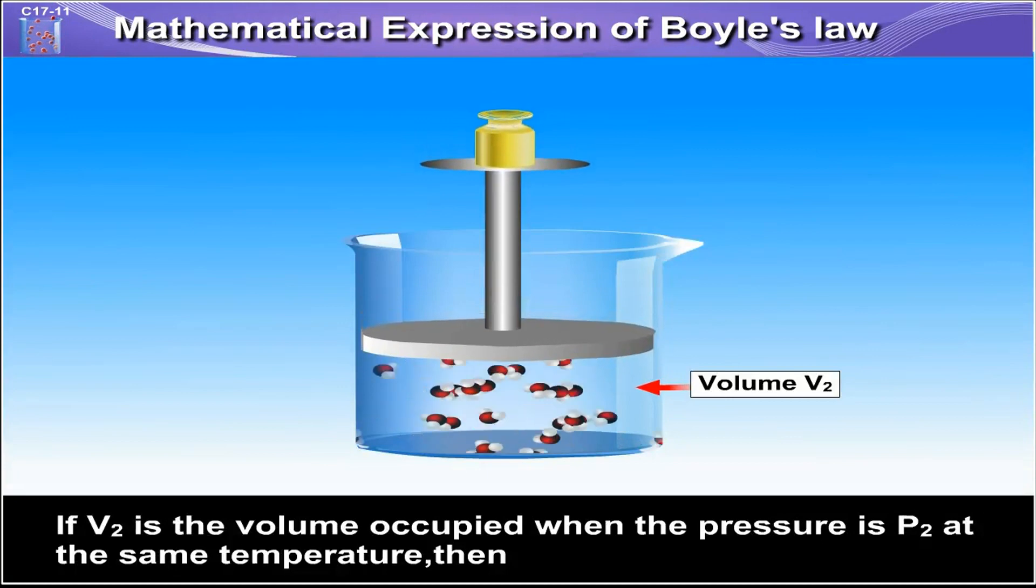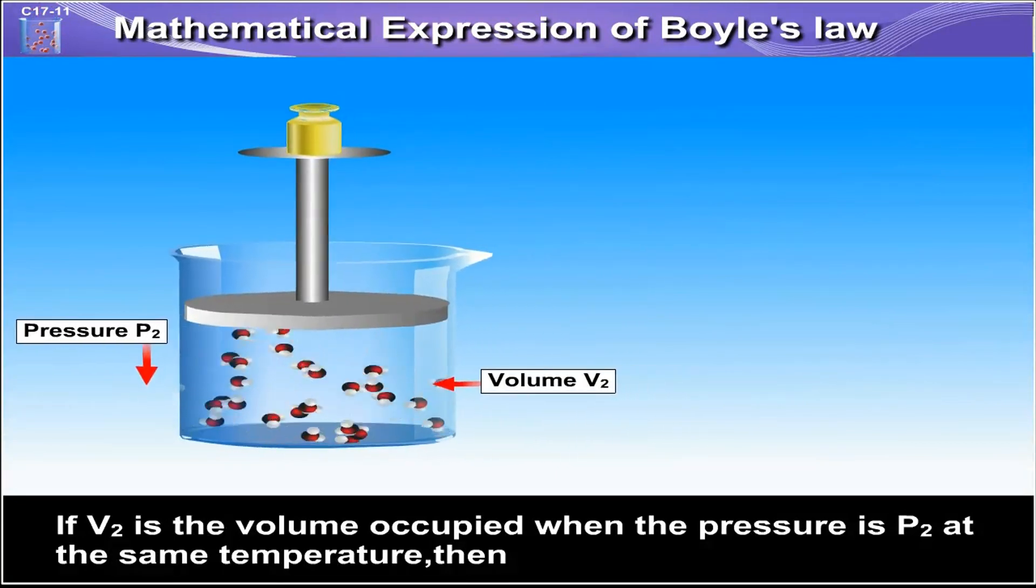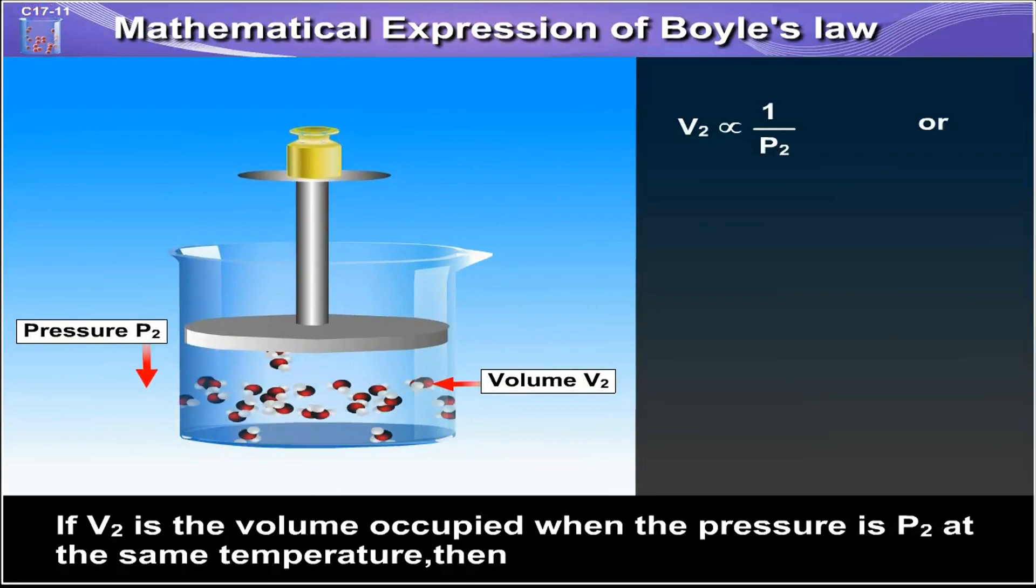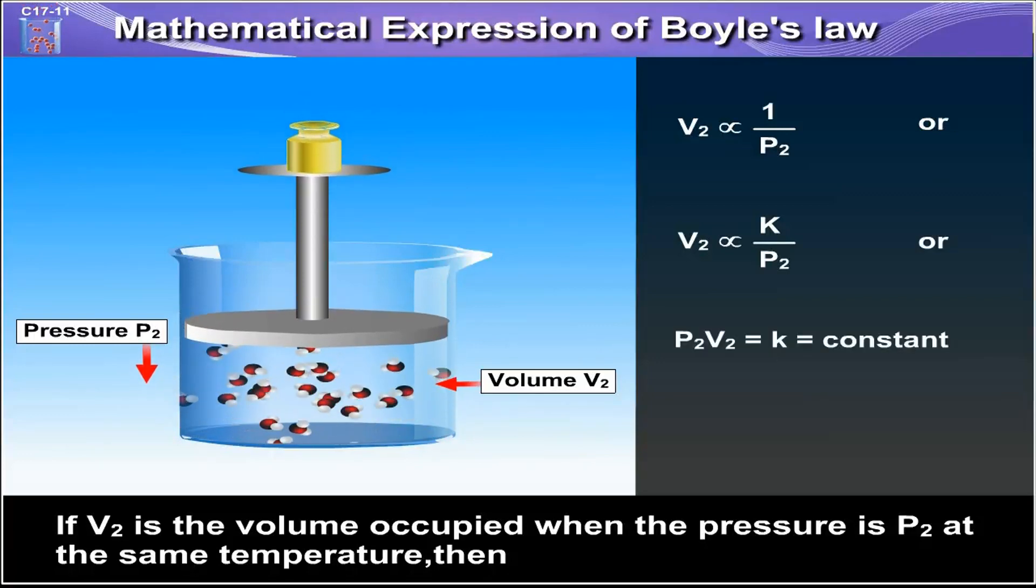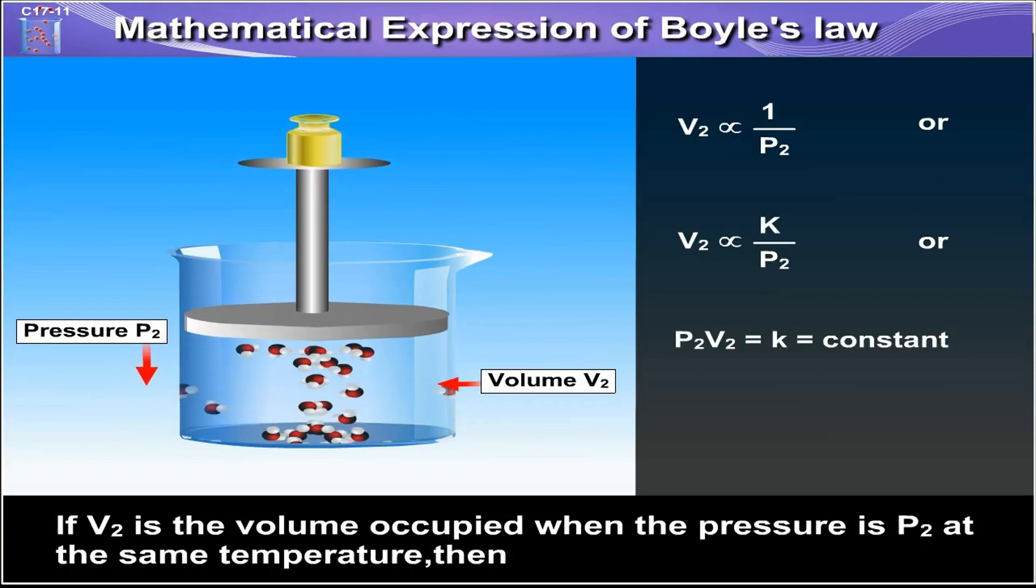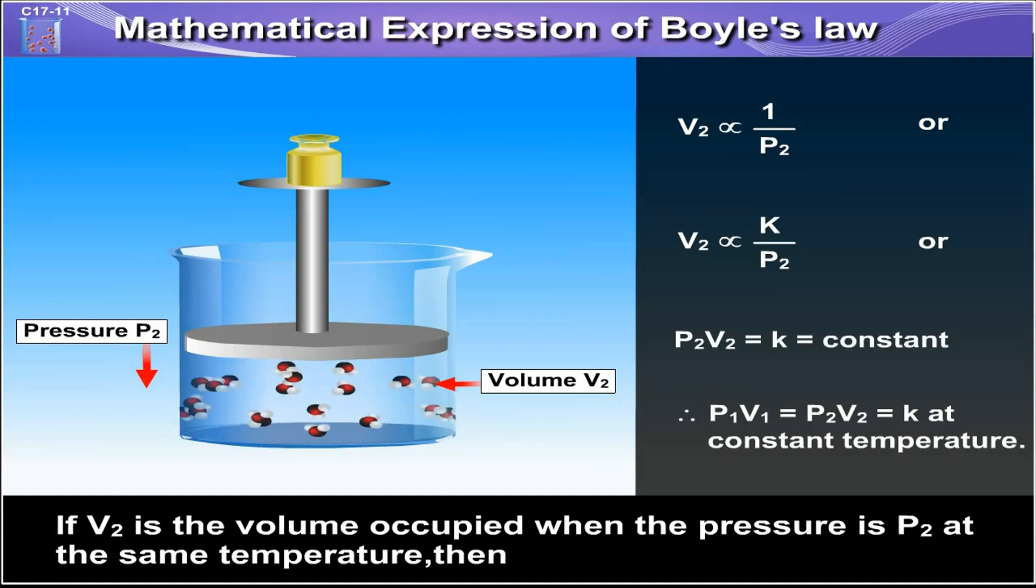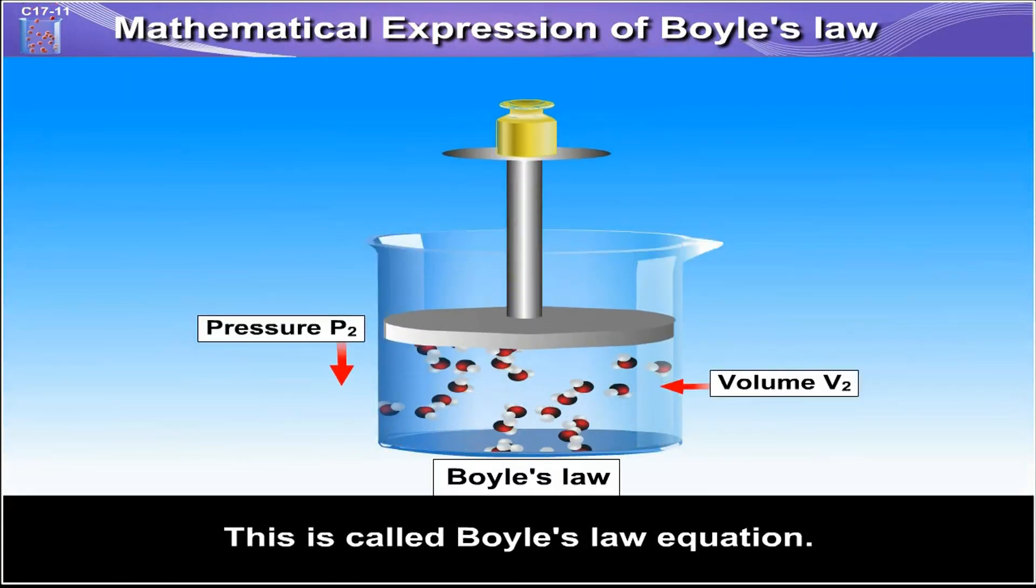If V2 is the volume occupied when the pressure is P2 at the same temperature, then V2 is inversely proportional to P2, or V2 is equal to K upon P2, or P2V2 is equal to K is equal to constant. Therefore, P1V1 is equal to P2V2 is equal to K at constant temperature. This is called Boyle's Law equation.